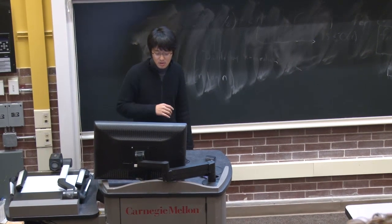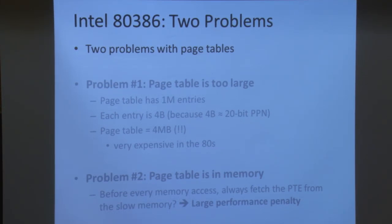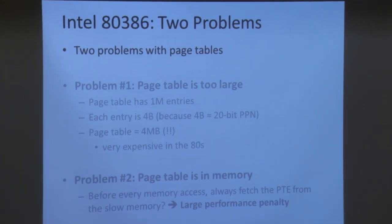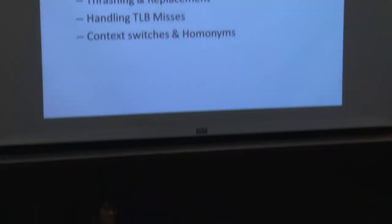We covered two major problems with page tables. The first was that the naive flat page table is too large — 4 megabytes — solved by using a hierarchical multi-level page table that avoids allocating empty entries in bulk. The second problem was that the page table is stored in memory and slow to access, solved by introducing a special translation cache inside the processor — the TLB. Next lecture will mostly be recitations, but I'll quickly cover remaining paging topics beforehand. Does anyone have any questions so far?